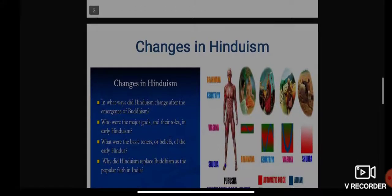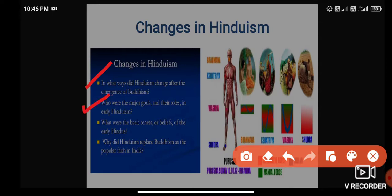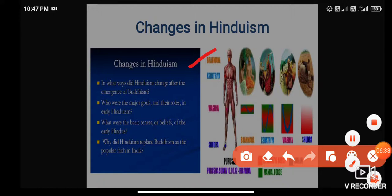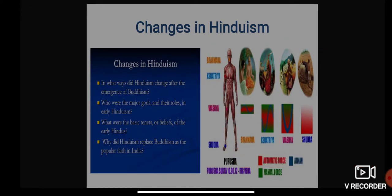There are four key questions about changes in Hinduism: In what ways did Hinduism change after the emergence of Buddhism? Who were the major gods and their roles in early Hinduism? What were the basic tenets or beliefs of the early Hindus? And why did Hinduism replace Buddhism as the popular faith in India? In Hindu religious tradition, the Varna system divides society into Brahmana (priests), Kshatriya (warriors), Vaishya (traders), and Shudra (farmers), as seen from the Aryan period.